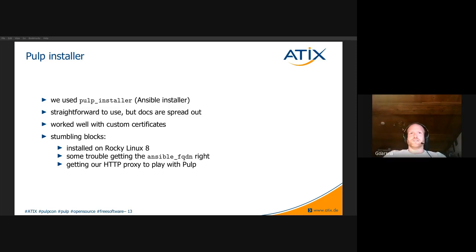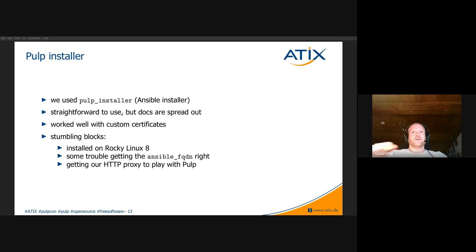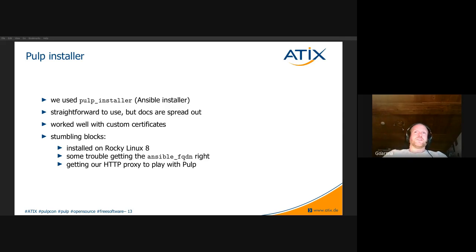During installation we encountered some stumbling blocks. First, we tried to install Pulp on Rocky Linux 8 and came across some weird errors. We found out Rocky Linux wasn't officially supported by the Ansible installer, but upon request it was pretty quickly added — thanks for that. We also had trouble with the Ansible FQDN used in the playbook as the content origin, which is the base URL for the Pulp instance. The FQDN was resolving to just the hostname, giving weird URLs without a domain name.